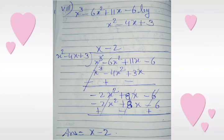We multiply x squared minus 4x plus 3 with minus 2 and get minus 2x squared plus 8x minus 6. We change the sign of the last line so that all terms are cancelled. The final answer is x minus 2.